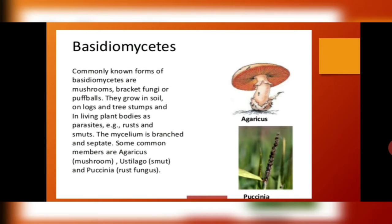The next type is basidiomycetes, commonly known as mushrooms, bracket fungi, or puffballs. They grow in soil, on logs and tree stumps, and in living plant bodies as parasites. Examples include rust and smuts. The mycelium is branched and septate. Some common examples are the common mushroom Agaricus, Ustilago called the smut, and Puccinia called the rust fungus.